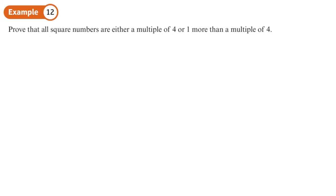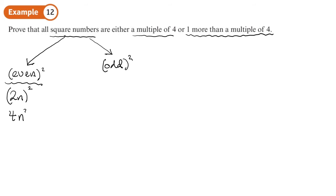Prove that all square numbers are either a multiple of 4 or one more than a multiple of 4. Square numbers are either even numbers that have been squared or odd numbers that have been squared. So let's see what happens with each one. Let's take an even number and square it.